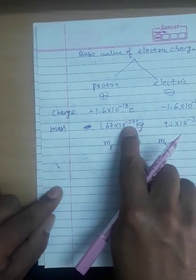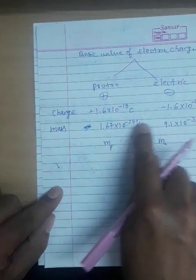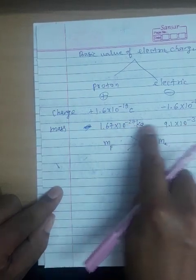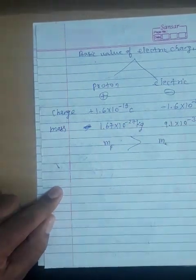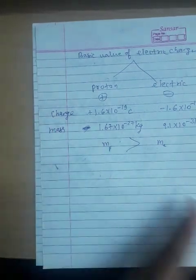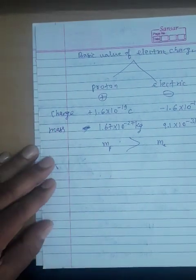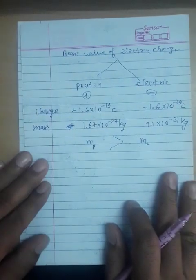If we compare, the proton's mass is greater than the electron's mass by more than 1,000 times. This is the mass property.